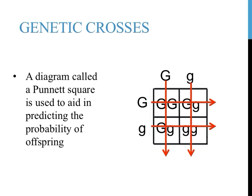When you drag these letters to the right and drag these letters down from the outside of the Punnett square, each of the boxes within the Punnett square should contain two letters.